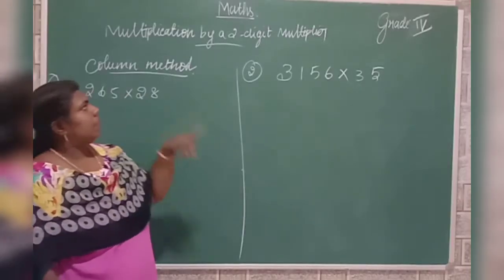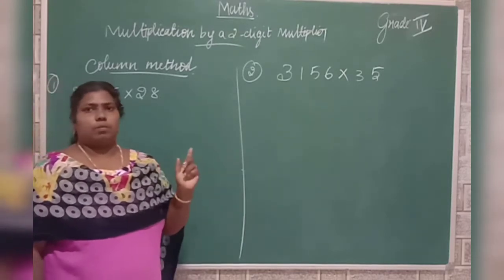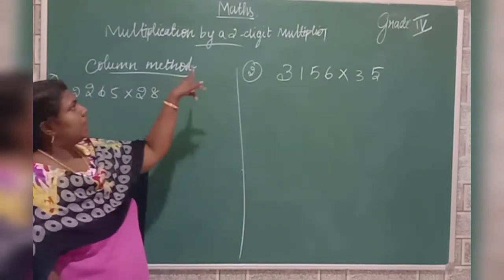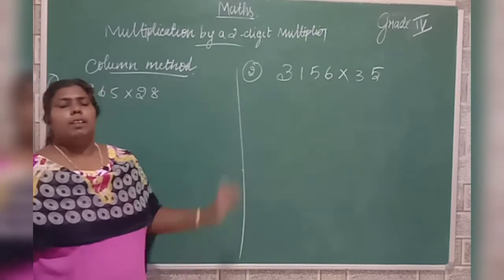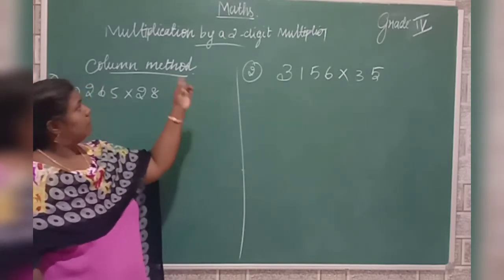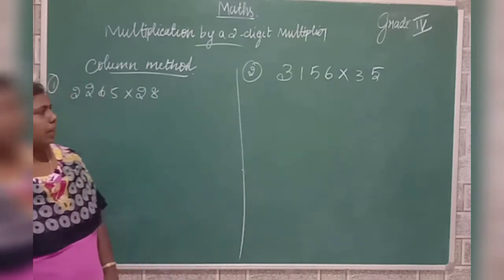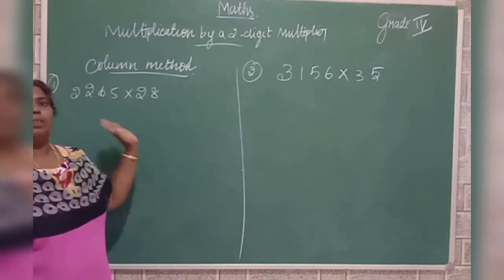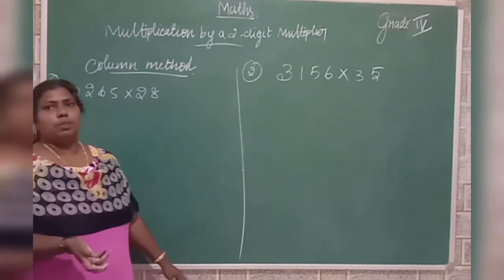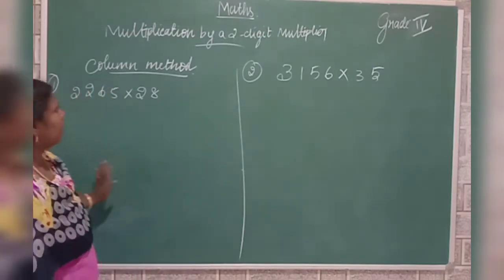Now, multiplication by a two-digit multiplier. In a previous class we discussed multiplication by a single-digit multiplier. Now we are going to discuss multiplication by a two-digit multiplier. First we are going to use the column method, then we are going to learn the lattice method.